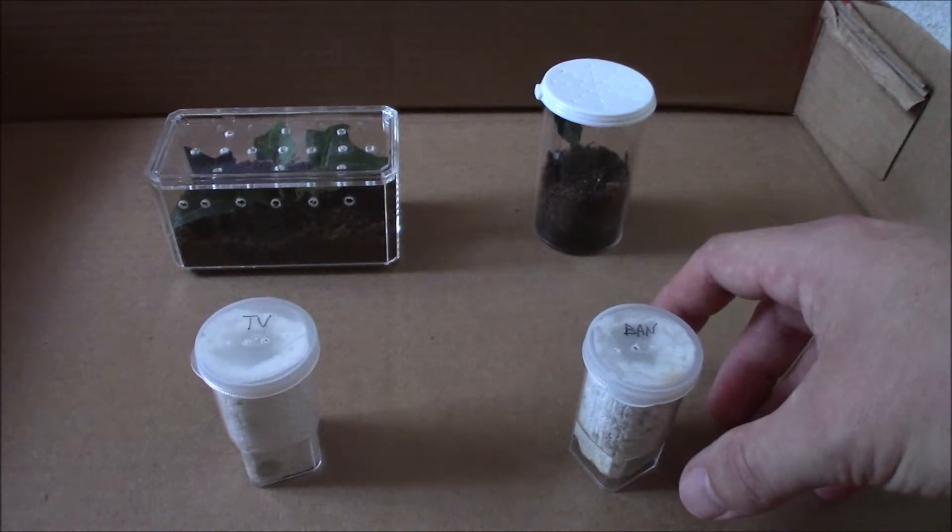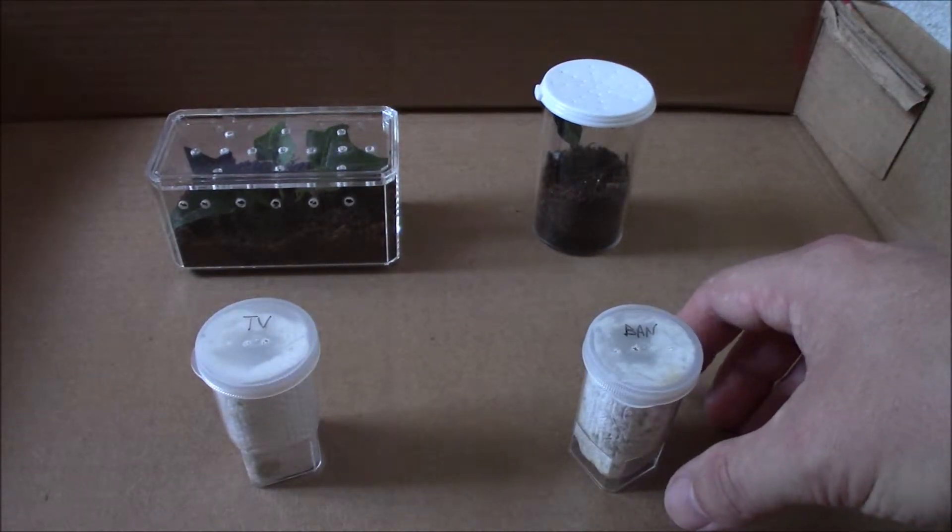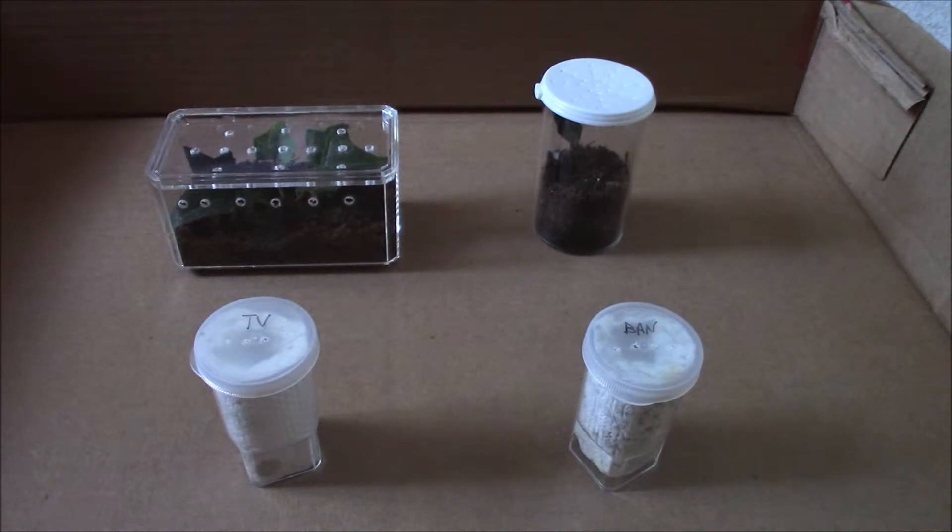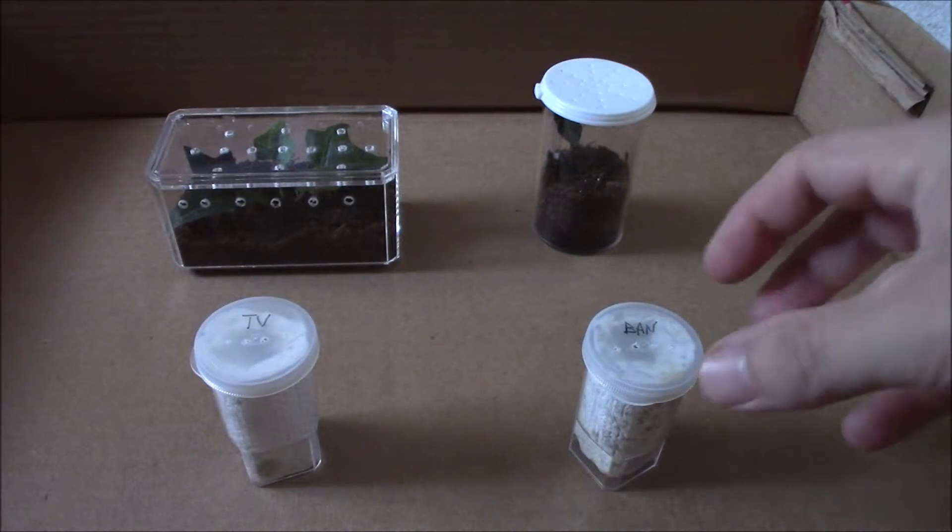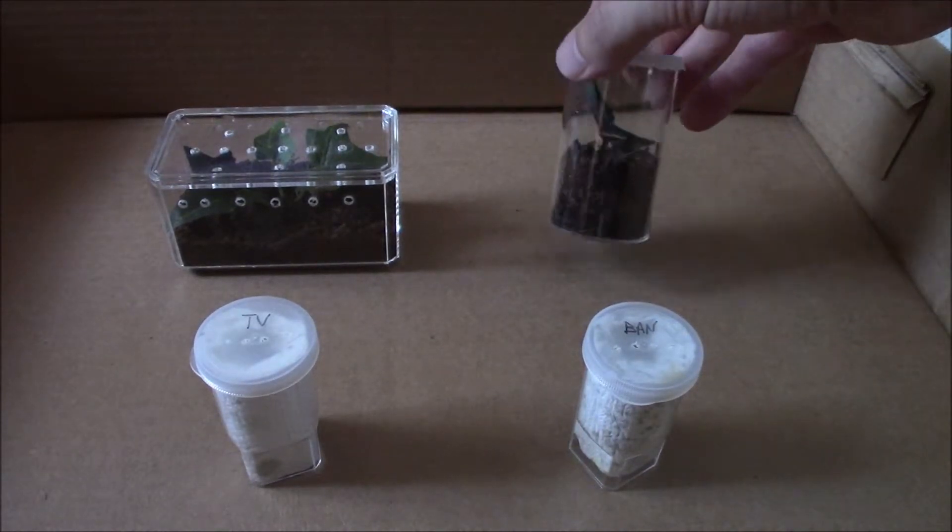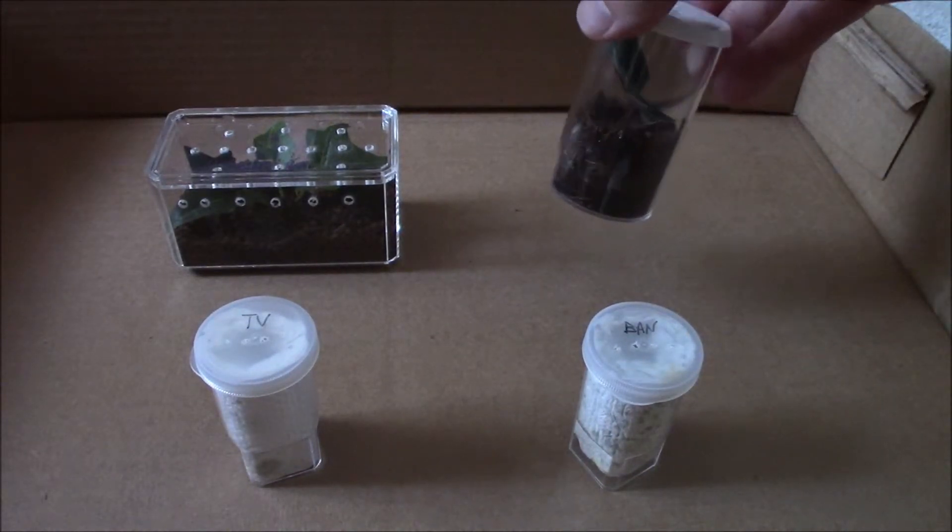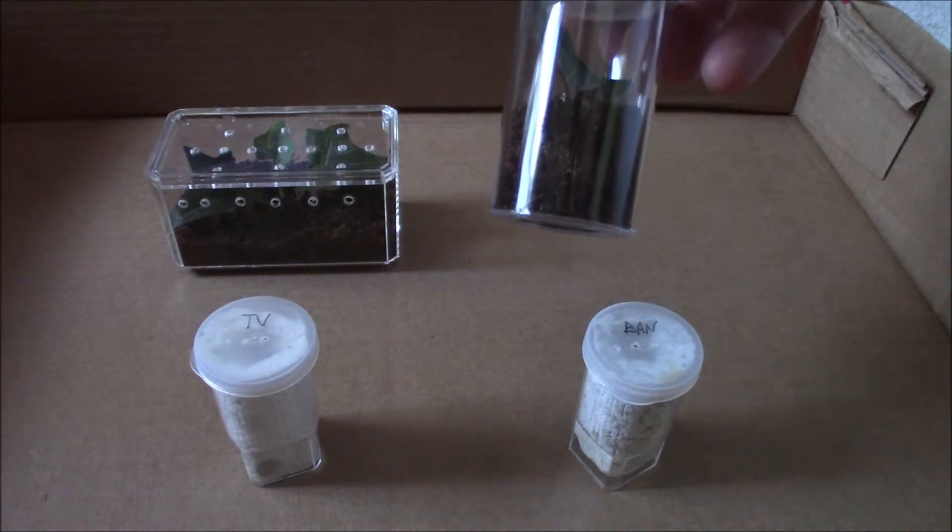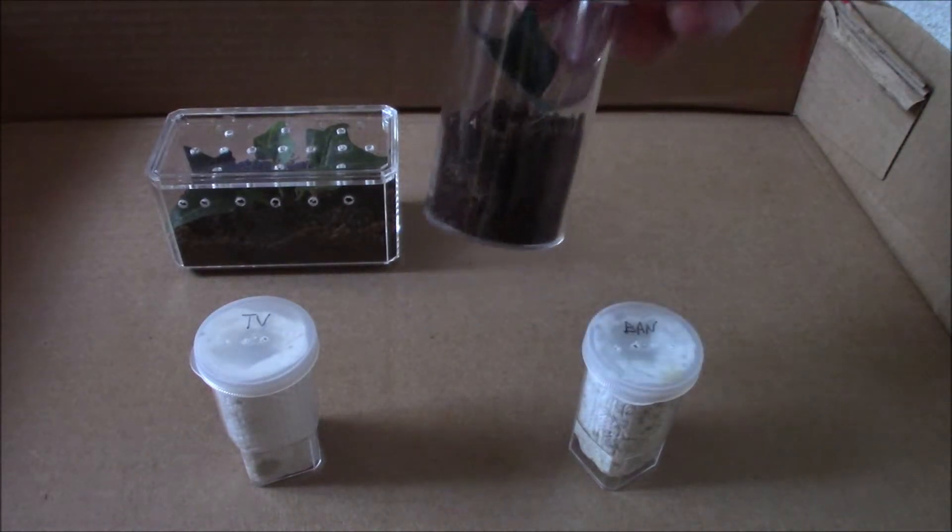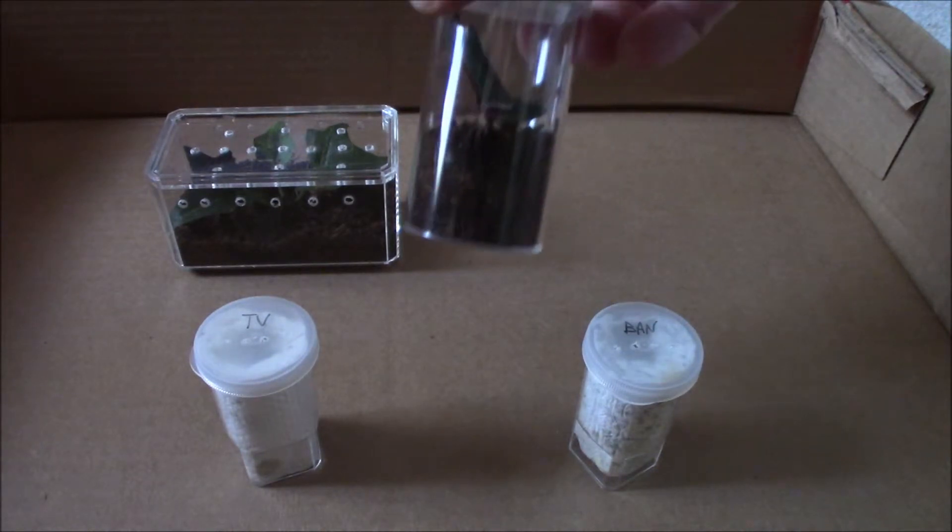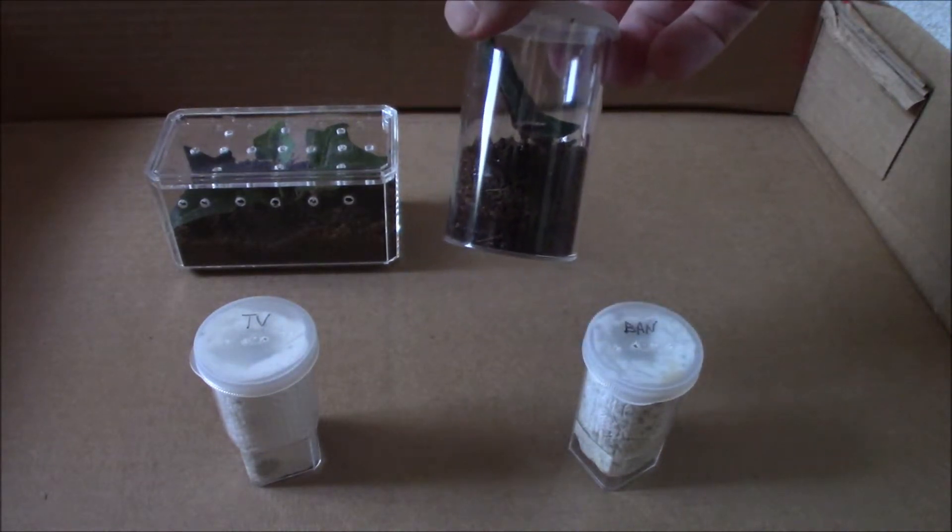So here on the right I have a small one centimeter spiderling for the Brachypelma albopilosum which is better known as the curly hair. Again this one's about one centimeter. You can see I have the little setup. I'm just using some of these clear specimen jars, some substrate, and a fake leaf in there for a little shelter. Should be plenty big enough for the time being.